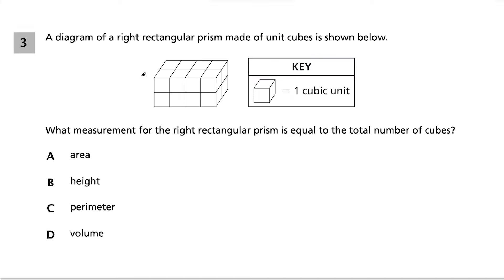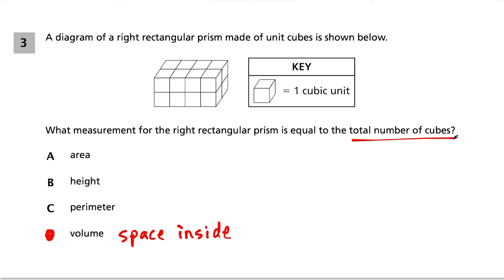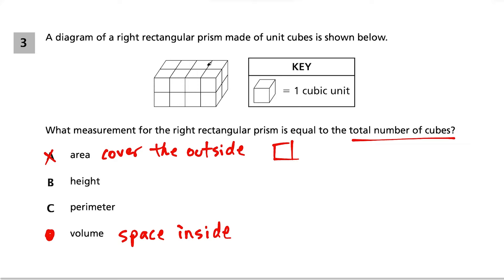Question 3. A diagram of a right rectangular prism made of unit cubes is shown. What measurement equals the total number of cubes? The answer is volume, because volume tells us the space inside a 3D shape — we measure that space with cubes. Area talks about how many squares we'd need to cover the outside, using square units.